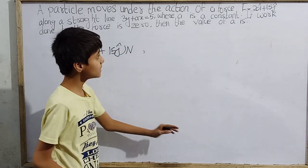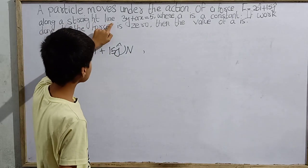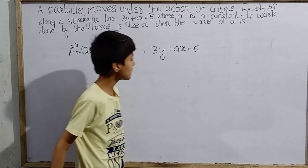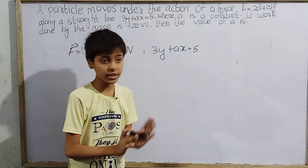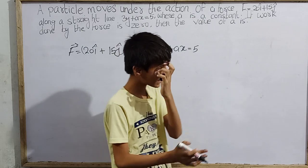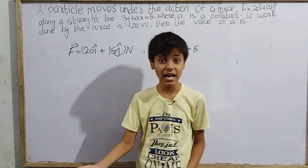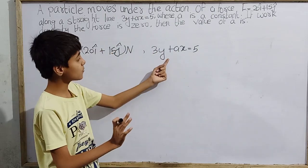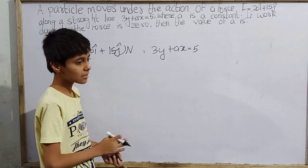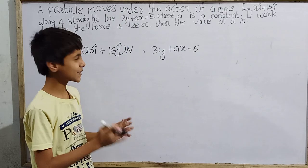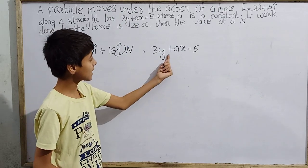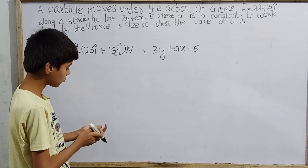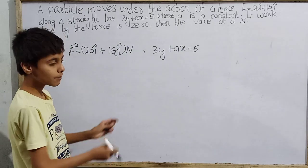The particle is moving along a straight line. This is the straight line equation: 3y plus ax equals 5. There is an equation for every kind of line — equations for parabola, hyperbola, and every shape. So the force 20 i-cap plus 15 j-cap, perhaps in Newtons, is acting as the particle moves along this straight line.